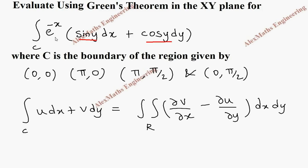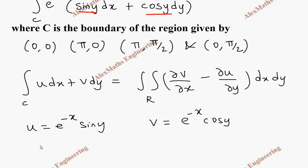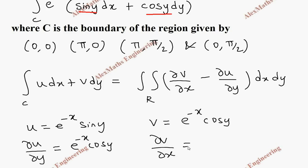From the problem, u equals e^(−x) sin(y) and v equals e^(−x) cos(y). From this, ∂u/∂y: x is constant and the derivative of sin(y) is cos(y). And ∂v/∂x with respect to x: differentiating e^(−x) gives e^(−x) times (−1), and cos(y) is a constant that stays as it is.